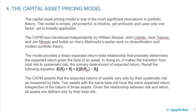Two assets with the same beta will have the same expected return, irrespective of the nature of those assets. Given the relationship between risk and return, all assets are defined only by their beta risk.